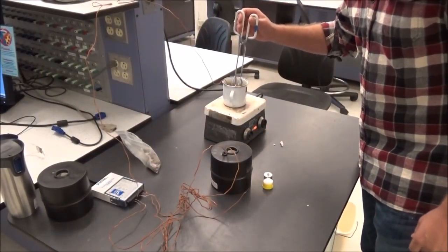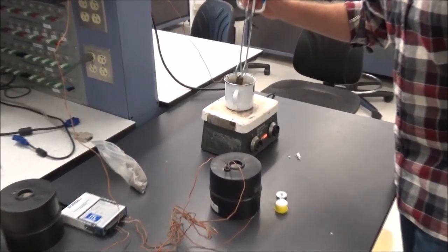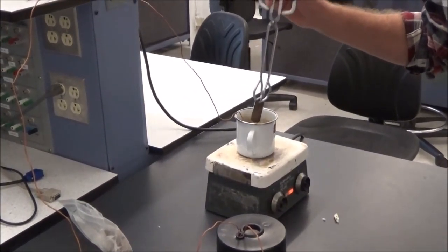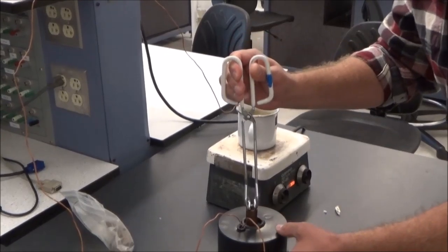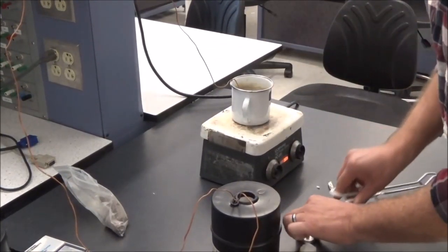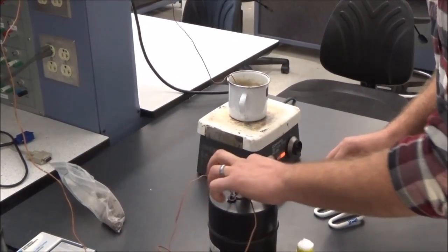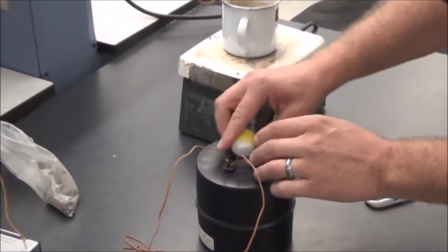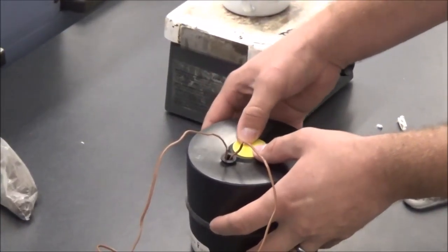All right, now I'll take the sample from the boiling water, try and get all the water off of it, and quickly drop it into the calorimeter, place the lid on, and place the sealing cap.